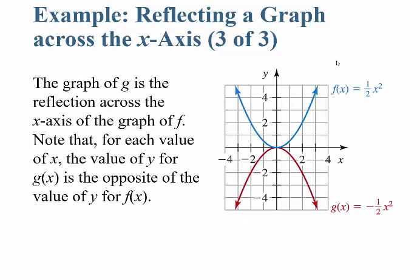When you plot these, the graph of g is the reflection — the mirror image across the x-axis — of the graph of f. For each value of x, the y value for g of x is the opposite sign of the y value for f of x. Whenever the only difference between two functions is a negative sign in front, it just reflects the graph across the x-axis.